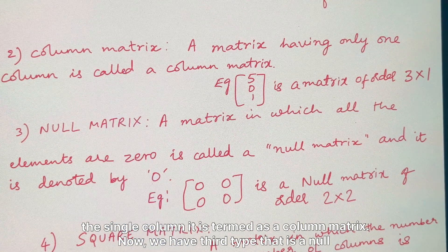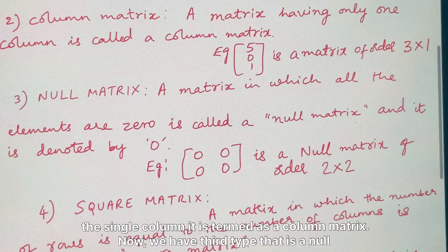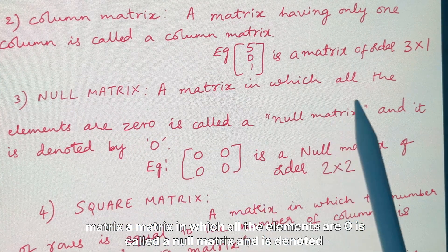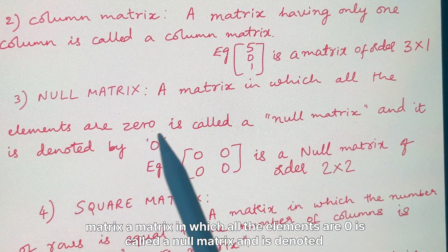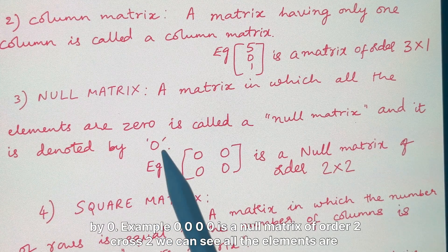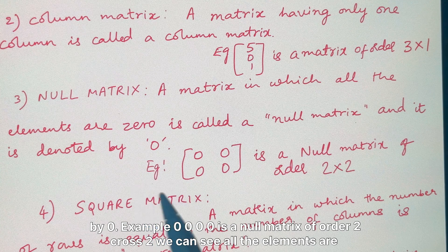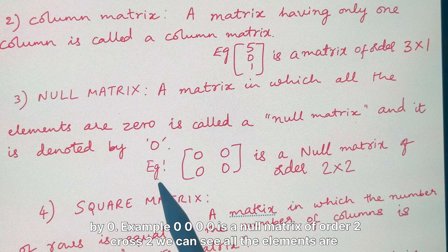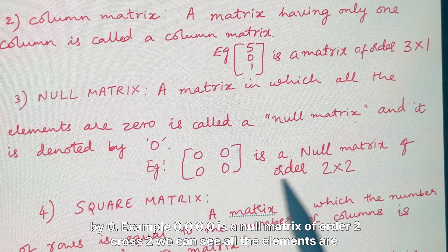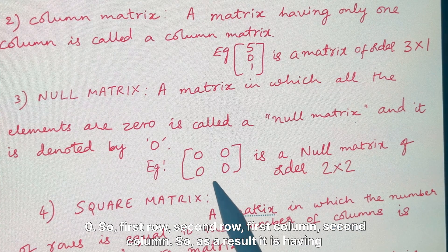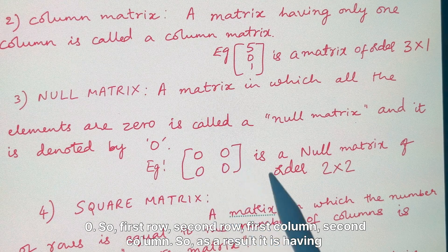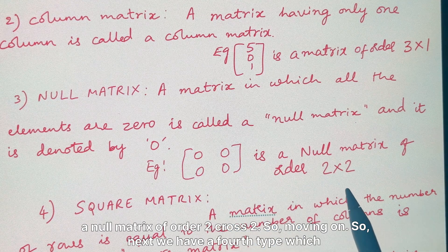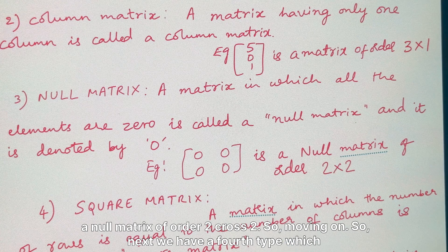The third type is a null matrix — a matrix in which all the elements are 0 is called a null matrix and is denoted by 0. For example, [0 0 / 0 0] is a null matrix of order 2 cross 2, as we can see all the elements are 0.